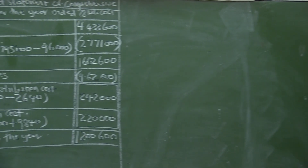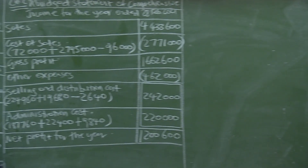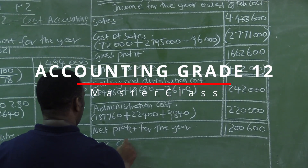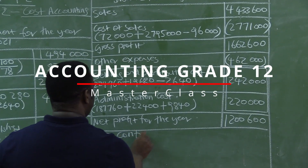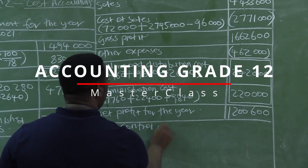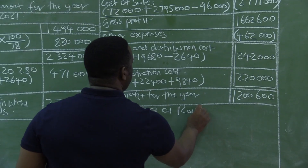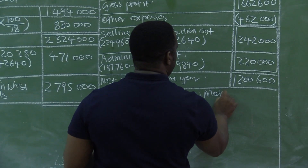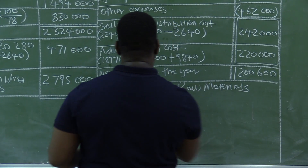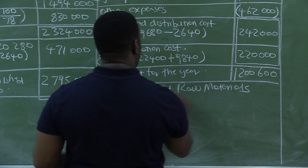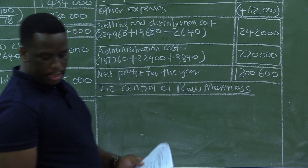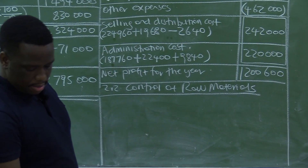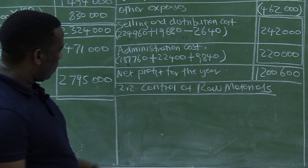2.2 is Control of Raw Materials. We are now looking at the control of raw materials.